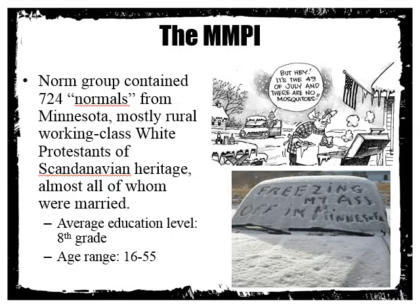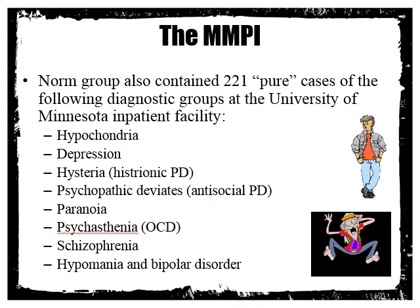There was a second norm group: 221 pure cases from the University of Minnesota inpatient facility. 'Pure' meant they only had one diagnosis — those with multiple diagnoses were excluded. So there were the Minnesota Normals and this inpatient group, allowing researchers to compare responses and identify what differentiated normal from psychopathological.